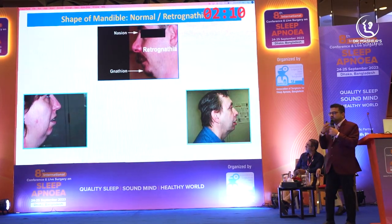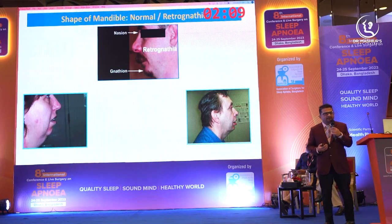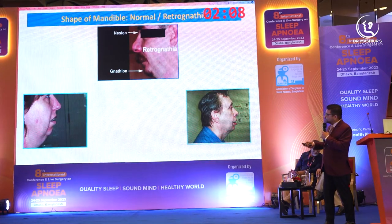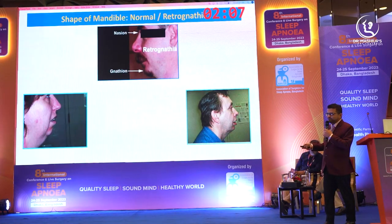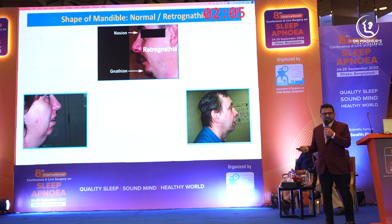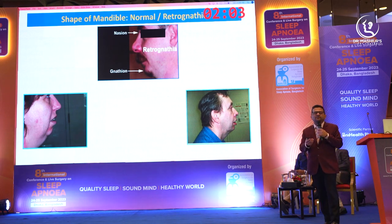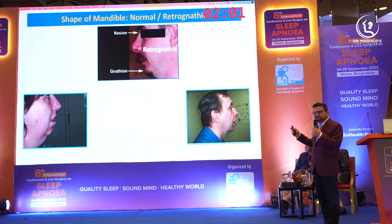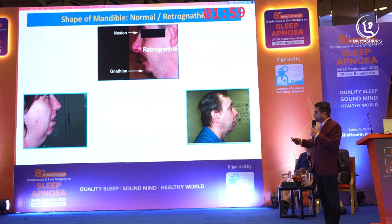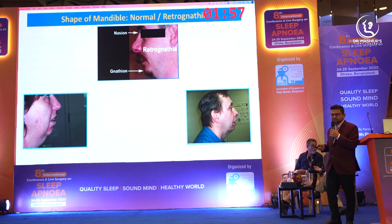Then there is the patient with a retruded mandible. If we do a tonsillectomy or some sort of tongue surgery, it will not help. Either this patient needs hypoglossal nerve stimulation, or this patient has to undergo MMA — maxillomandibular advancement — to get cured. We have to understand these phenotypes.